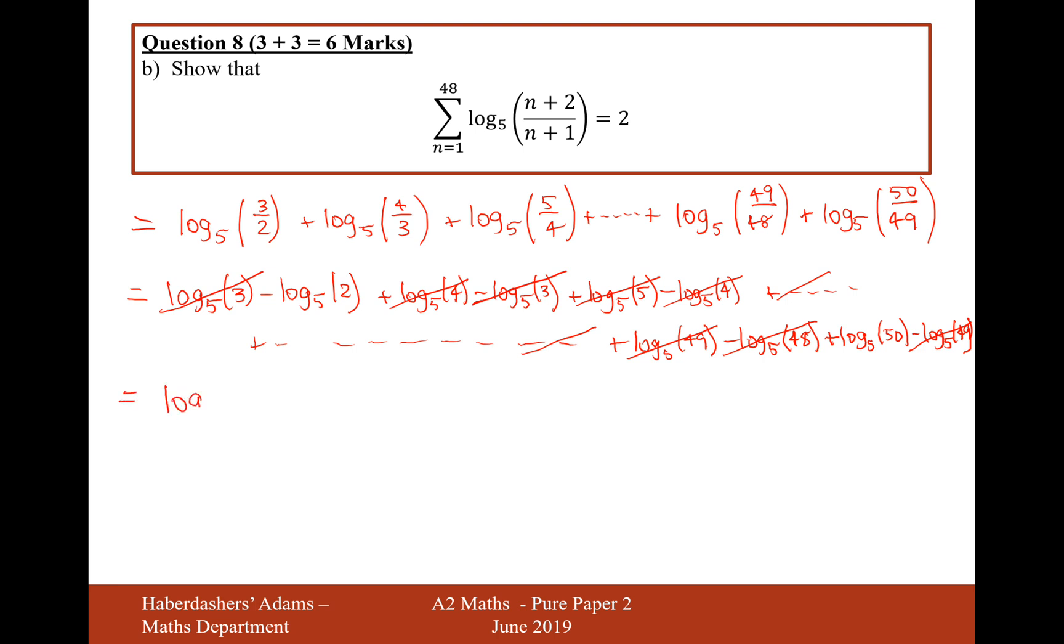We're left with positive log 5 of 50 and then minus log 5 of 2. So therefore, now we can combine this together. Log 5 of 50 over 2 is 25 and log 5 of 25 is 2.